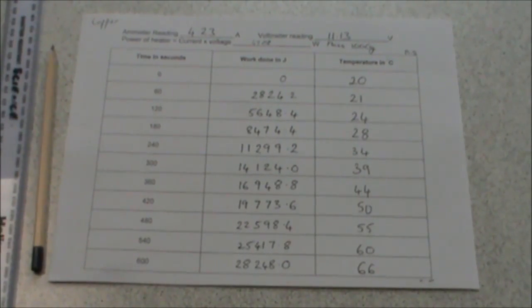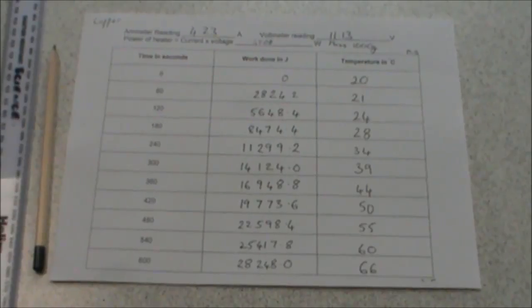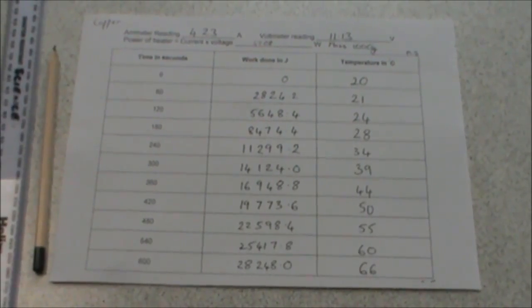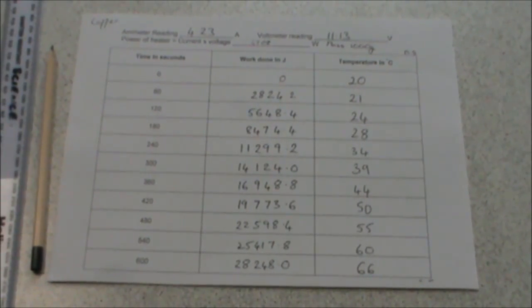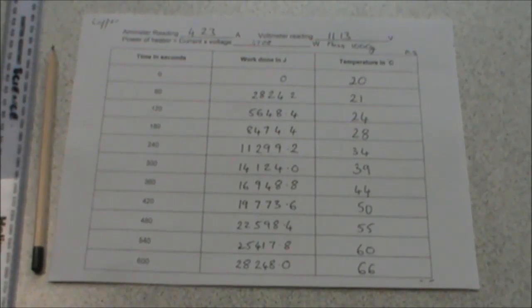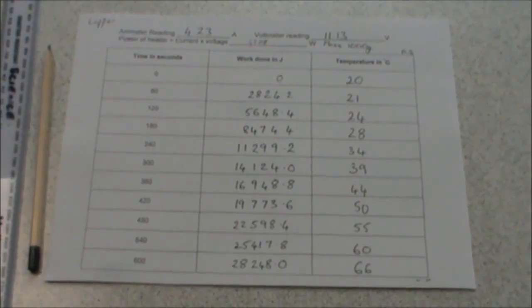The first thing I have to do is I have to choose a suitable scale. We can see that my work done goes up to 28,248. So a suitable scale would go up to 30,000. That will allow me to go up in even steps, probably of 5,000. The temperature goes from 20 to 66, so I would want to go up in 10s to 70 degrees. So as you can see, I've already done my y-axis from 0 to 70. I now need to label the x-axis, and I'm going to use 10 small squares to equal 5000 joules.